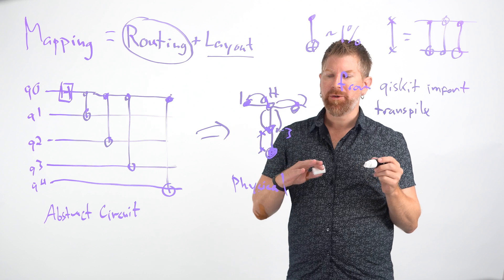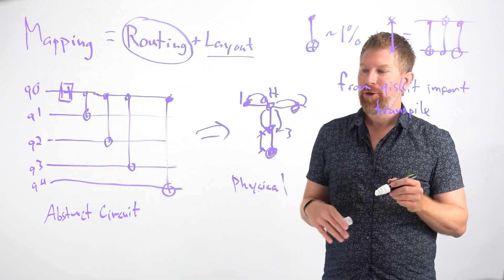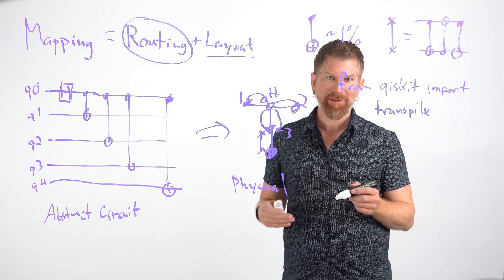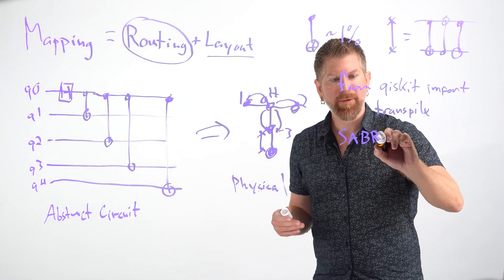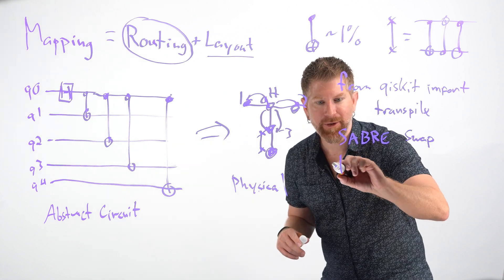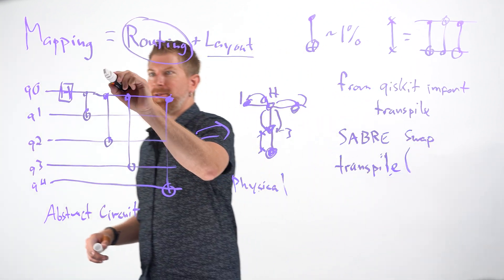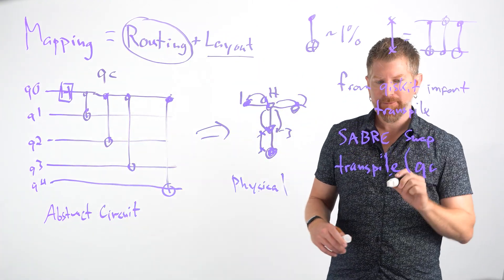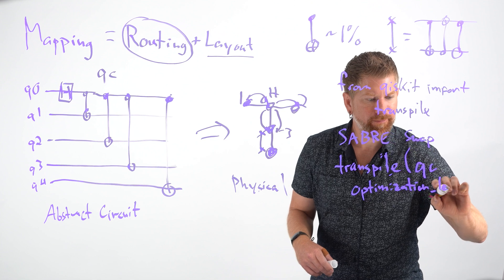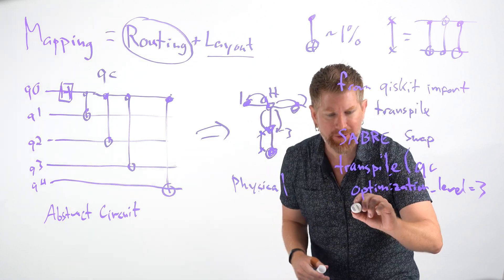Okay, so when we want to do the best job of doing this routing problem, we're going to use the transpile on its highest optimization level, which is actually a classically hard problem to perform this optimal mapping. So we use a stochastic type method called SABRE-swap. And that's activated with transpile transpilation level three. So if I take my transpile, I take my quantum circuit, let's say this thing's called QC, I'm going to transpile QC. I'm going to set optimization level to three. And then I need to put in the coupling map, which is how we know which qubits are actually attached to each other on the physical system.